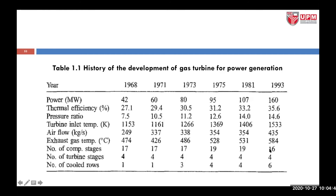The number of compressor stages was reduced because you do not want the added complexity of too many stages. Turbine stages and the number of cooled rows were also optimized — earlier only one turbine stage was cooled, but now more than six turbine stages can be cooled.